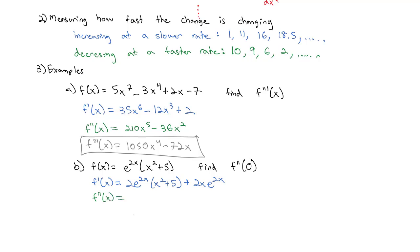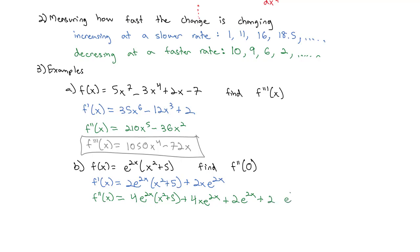Now we find the second derivative by taking the derivative of that expression — we've got two product rules to do. The derivative of 2e^(2x) is 4e^(2x), giving us 4e^(2x)(x² + 5) plus 4xe^(2x). Then for the 2xe^(2x) term, also a product rule: derivative of the first, 2, times e^(2x), plus derivative of e^(2x) which is 2e^(2x), times 2x, giving 4xe^(2x).